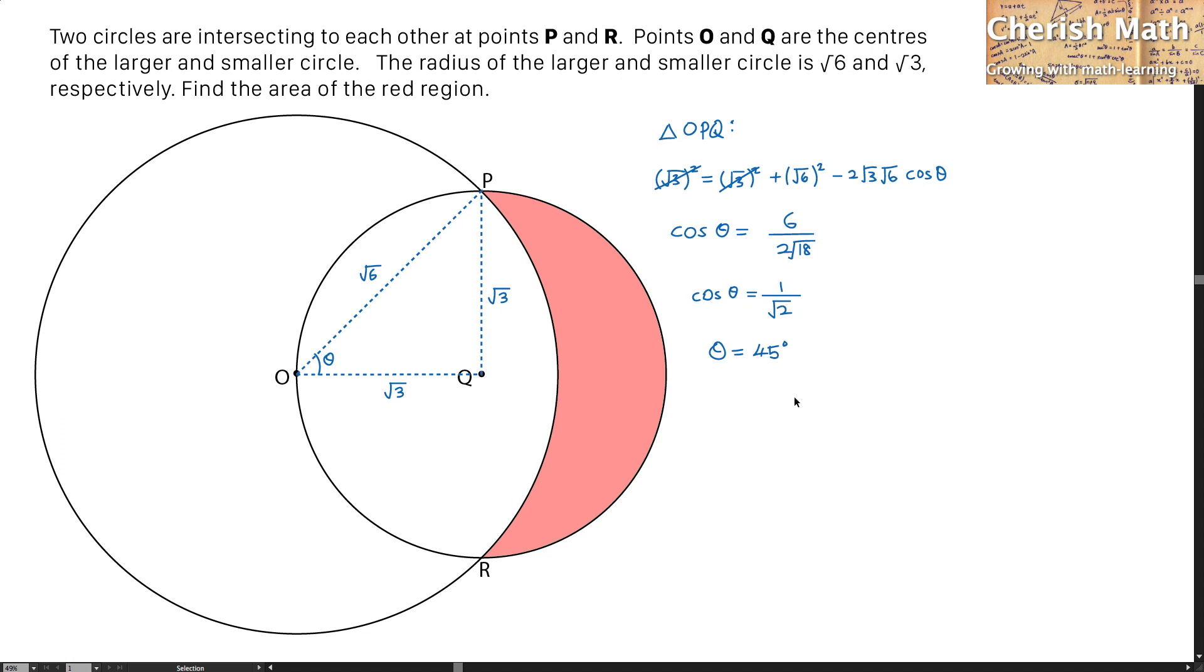Next, I'm going to produce another triangle OQR. This triangle OQR is identical to triangle OPQ on the top. Since θ is 45 degrees, the same angle applies here as well, which is 45 degrees.